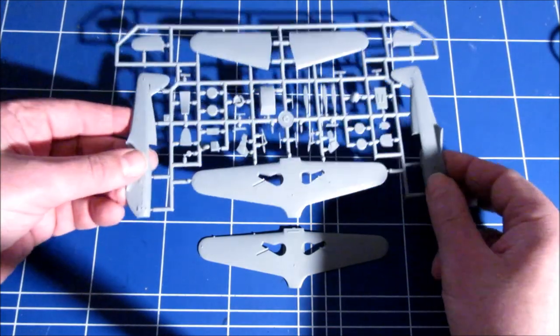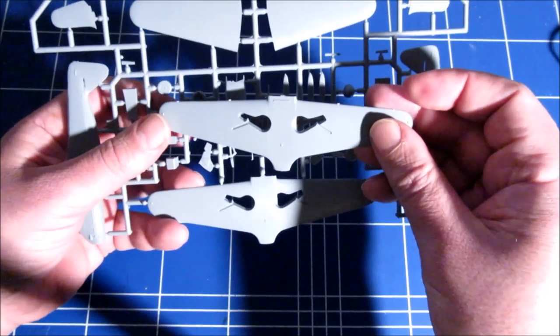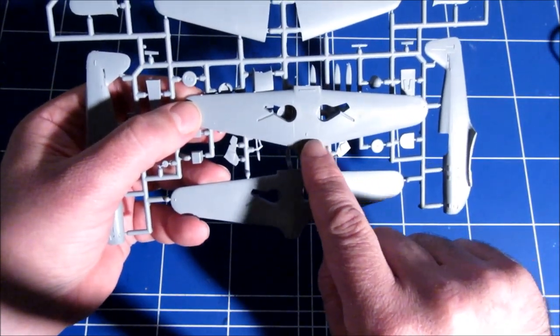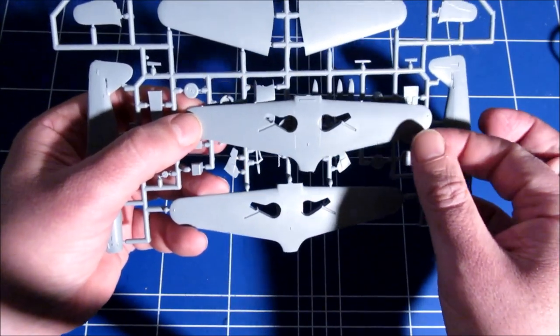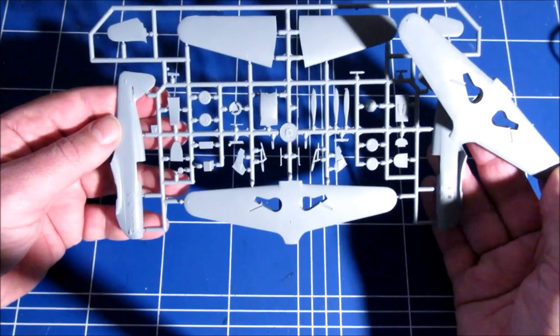The one main sprue and an extra lower wing. There is a slight difference in panel lining here. You can make two different versions from this kit.